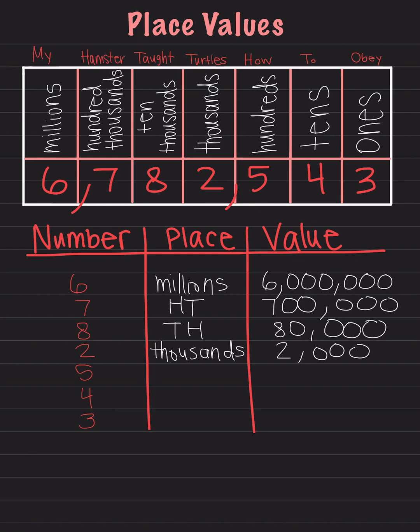We have the number 5 next. It is in the hundredths place. Now I will go to the value of the 5. The 5 is 5, and there are only two digits after the 5, so we will replace both of them with zeros. The value is 500.